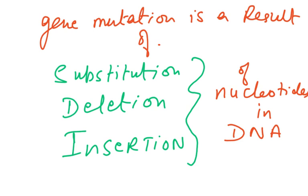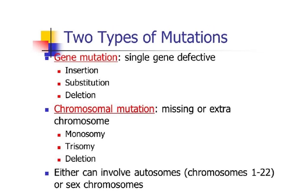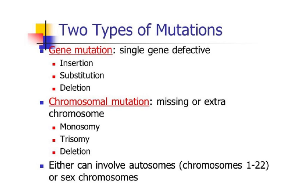Gene mutation is the result of three phenomena: substitution, deletion, or insertion of nucleotides — not of bases, of nucleotides. The entire nucleotide has to be inserted, substituted, or deleted in the DNA. There are two types of mutations: gene mutations, which result in a defect in one gene; and chromosomal mutations, which involve missing or extra chromosomes affecting either autosomes or sex chromosomes.